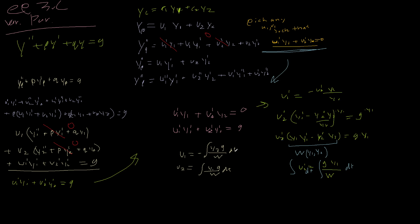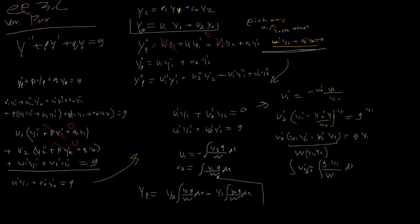Going back to our particular solution formula, we find that y_p equals y2 times the integral of y1·g over the Wronskian, minus y1 times the integral of y2·g over the Wronskian. This is the general way to solve these, so we don't have to use guesses like in the other method.